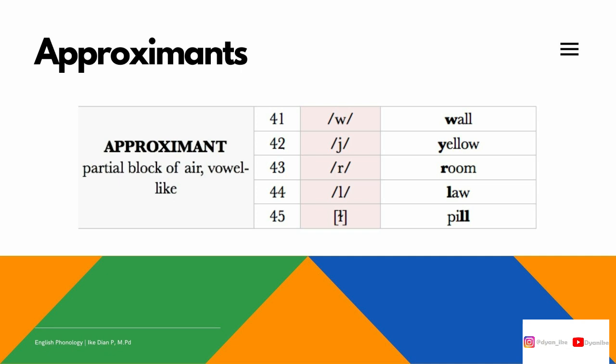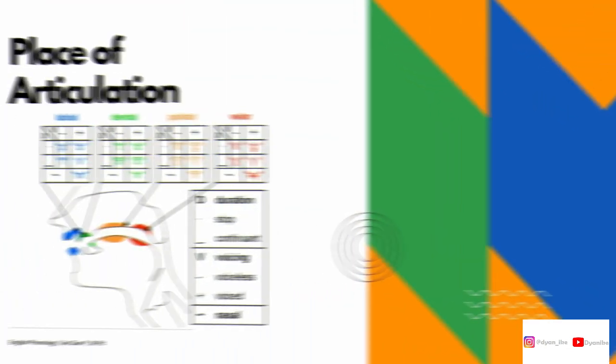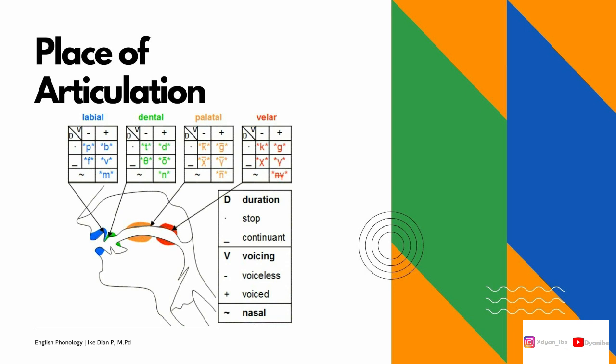Moving on to approximants — it's a kind of partial block of air. Here I have five consonants in the approximant category: W for 'wall,' J for 'yellow,' R for 'room,' L for 'love,' and L for 'pale.' Those are the approximant examples.